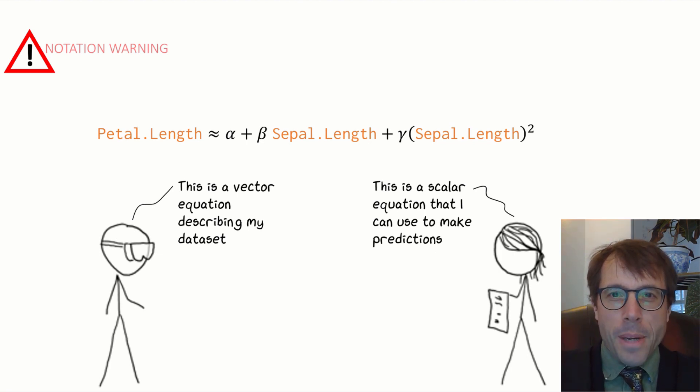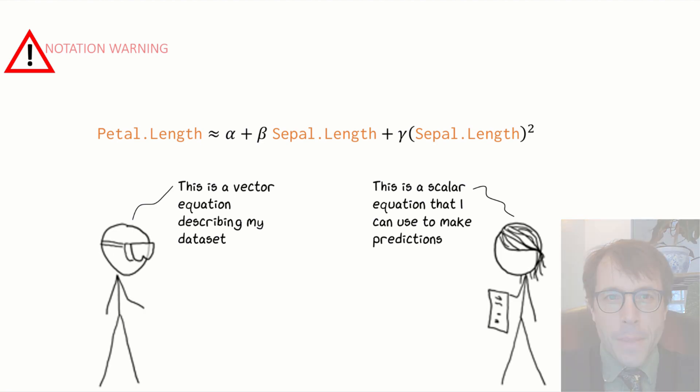If I want to estimate petal length for a single new flower, then all I need to do is plug in its sepal length, a scalar, on the right hand side of the equation, and I'll get the prediction for this individual flower. So when we write out a linear model equation, the equation has this kind of dual personality.